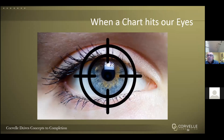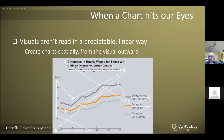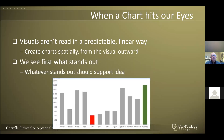Now the next topic: when a chart hits your eyes — or more precisely, when the light from a chart hits our eyes. Visuals aren't read in a predictable, linear manner the way text is. We don't go from left to right and top to bottom. We should think about charts spatially from the visual outward. Eye-tracking lines show how someone absorbed a graphic, and notice how their eyes went all over the place. You need to keep that in mind when designing a data visualization. We see first what stands out — whatever stands out is what we'll focus on.